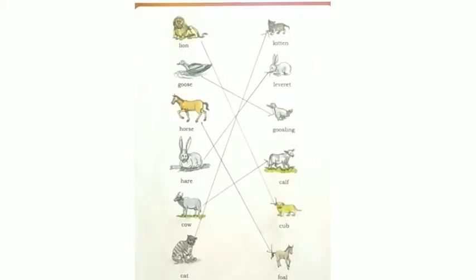The baby of lion is cub. Goose is gosling. Horse, foal. Hare, leveret. Cow, calf. Cat is kitten.